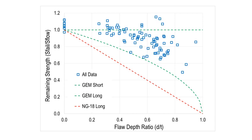If you see these blue squares, these are all data points taken from the industry literature. And what you'll see is that they are all above or equal to my GEM long limit, indicating from this data that my square root relationship appears to be valid. I've since found a lot more data to add to this plot, and I'd like to show you how the new data comes into play.